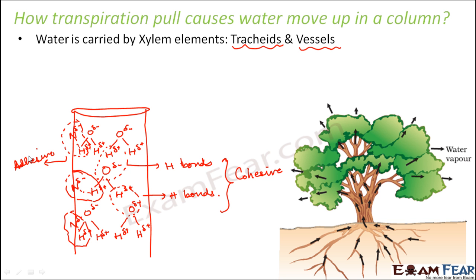If you consider the entire scenario, all the water molecules are moving like a chain inside the xylem tube. If you pull one molecule up, all the other molecules experience an upward pull as well. Since all are attached to the cell wall, whenever you pull one, all others slide along the cell wall. Because of this adhesion and cohesion, water is able to move up in a column.